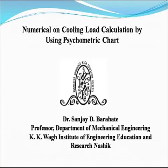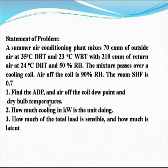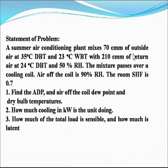Welcome back. Now we will discuss a numerical on cooling load calculation by using the psychrometric chart. First we will see the statement of the problem. A summer air conditioning plant mixes 70 cubic meters per minute of outside air at 35 degrees Celsius DBT and 23 degrees Celsius WBT